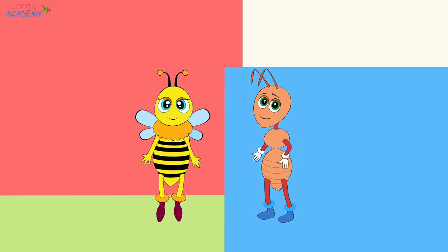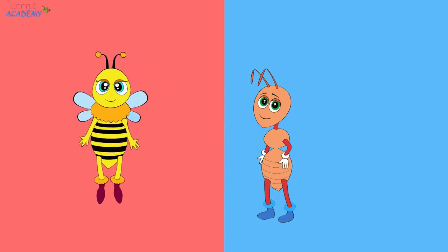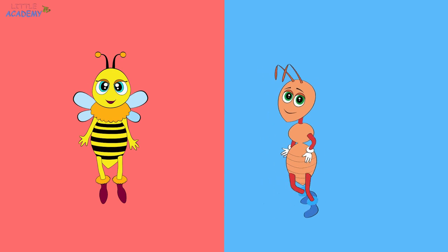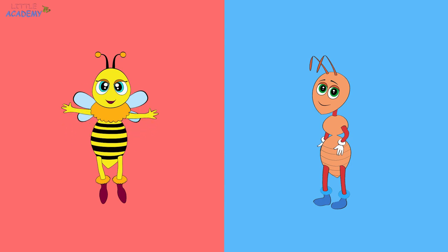Look! The screen split into two parts. One is red and the other is blue. The side that is red is on the left. And the side that is blue is on the right. This is the left side. This is the right side. Left, right. Left, right.